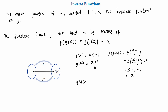And when we do it the other way around, g of f of x gives us g of (4x subtract 1), which equals 4x subtract 1 plus 1, all divided by 4. The ones cancel out, leaving 4x over 4, which simply equals x. So we can see that the functions are inverses of each other because in each case the composite function gives x, as stated in our definition.